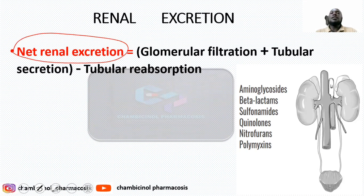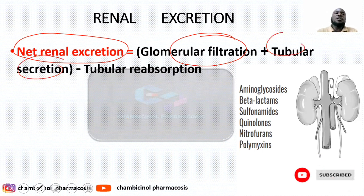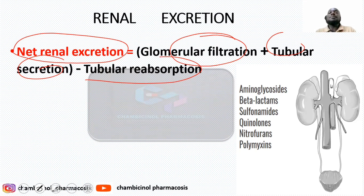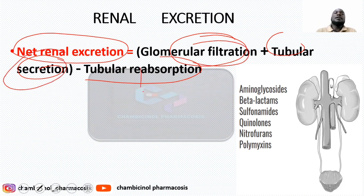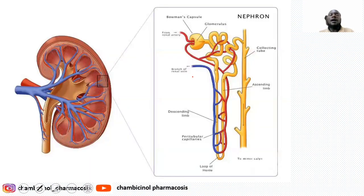We will see in detail the principle of urine formation — how the drug is taken from the blood until excreted in the urine, passing through glomerular filtration, tubular secretion, and tubular reabsorption. Let's first look at the anatomy and physiology of the kidney. In the kidney, the basic functional unit is the nephron, where all processes take place. The nephron has different compartments: the Bowman's capsule, proximal convoluted tubule, loop of Henle, distal convoluted tubule, and collecting ducts.